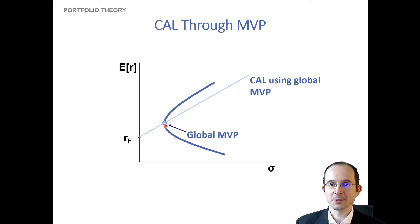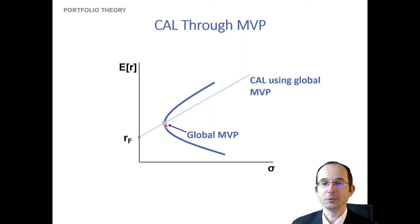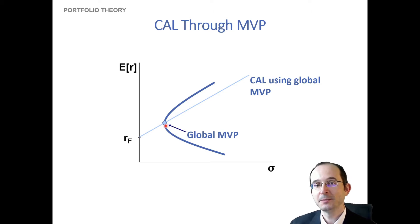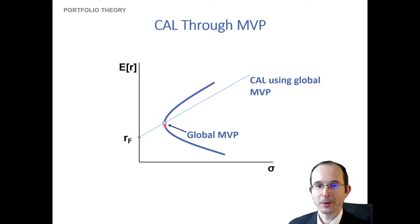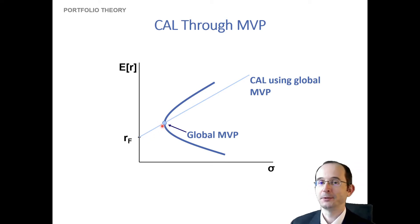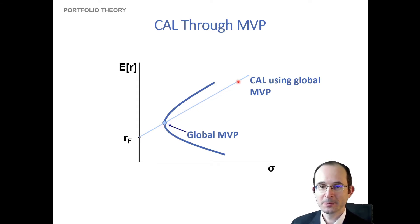By borrowing at the risk-free rate — or, if we don't want to make that relatively restrictive assumption, substituting a kinked capital allocation line when borrowing at a higher rate — we can still figure out what our capital allocation line would be, even if we invest more than 100 percent in the minimum variance portfolio.